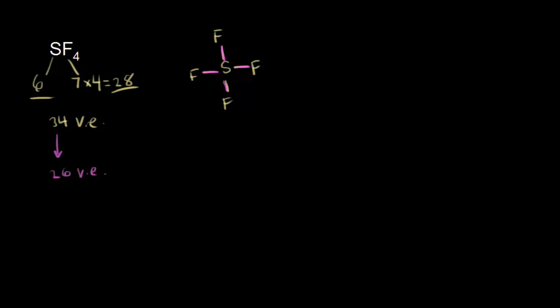We start putting the leftover electrons on our terminal atoms, the fluorines. Fluorine follows the octet rule, so each fluorine needs 6 more electrons since it already has 2. We put 6 valence electrons around each of the 4 fluorine atoms: 6 times 4 is 24, leaving 2 electrons. Those go on the central sulfur as a lone pair. Sulfur now exceeds the octet rule, but that's okay — it's in period 3. The formal charge on sulfur is 0.